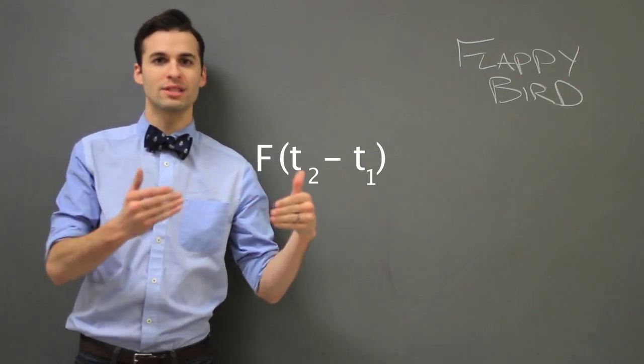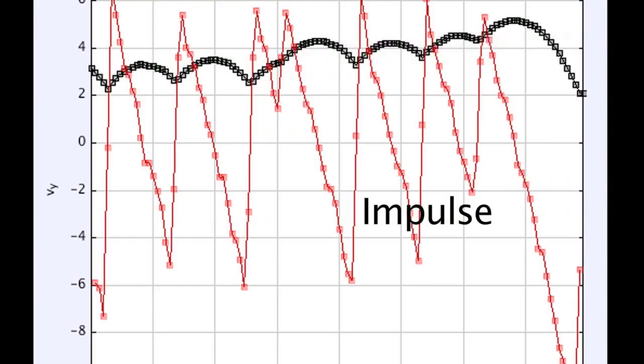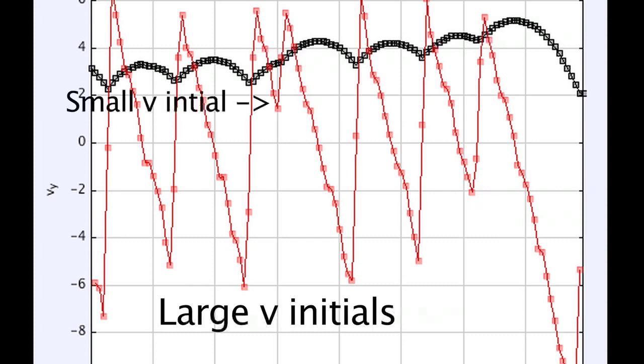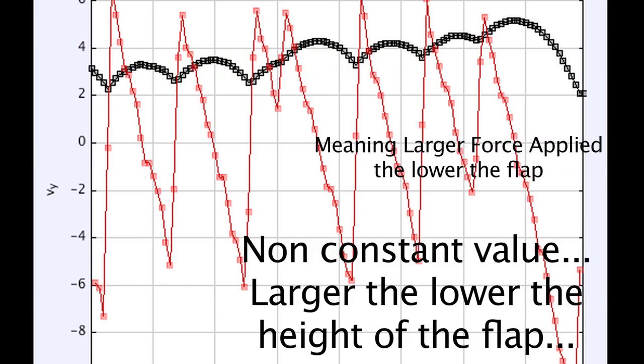This force in delta T, that is the impulse imparted by the wings. Now, we have a consistent V final, but a non-consistent V initial. The larger the V initial, the larger the impulse. But time remains the same. Therefore, we have a larger force, the lower the flap occurs.